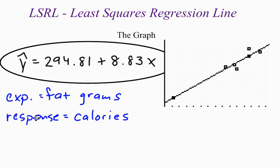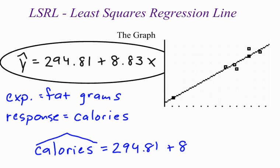Okay, my response variable is calories, so it should be calories hat. Calories hat. You just put a big carrot over the top of it. And then it would be 294.81 plus 8.83 times fat.